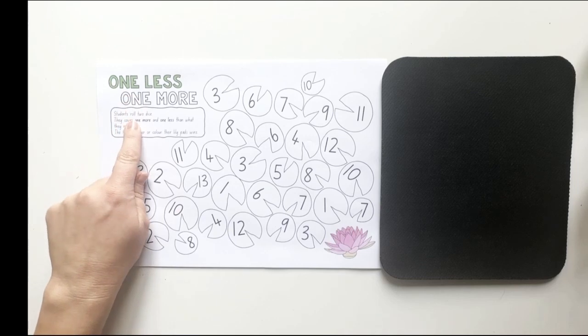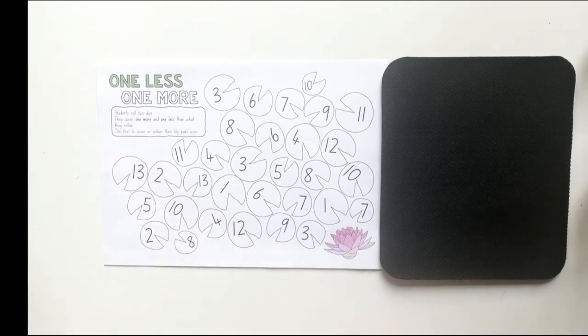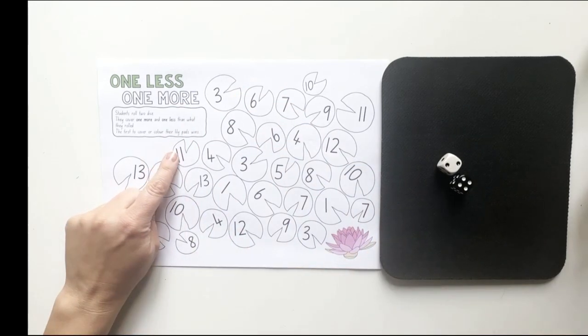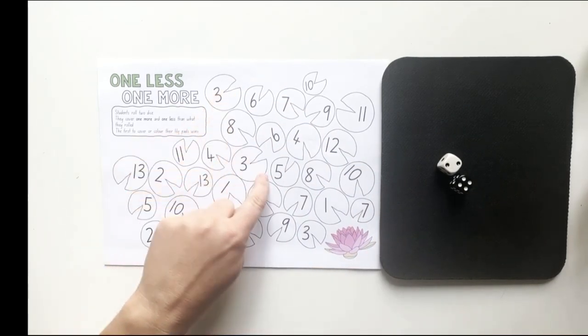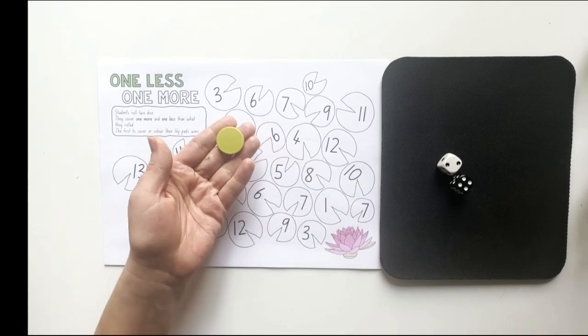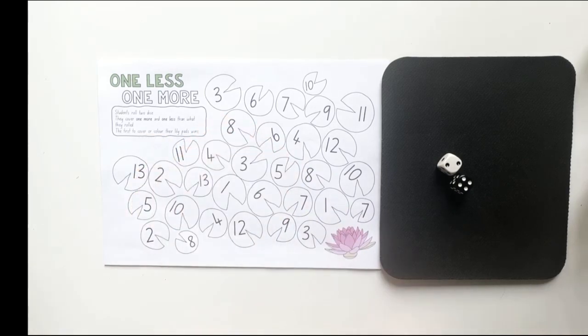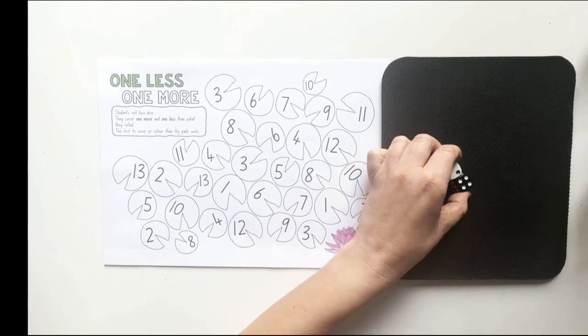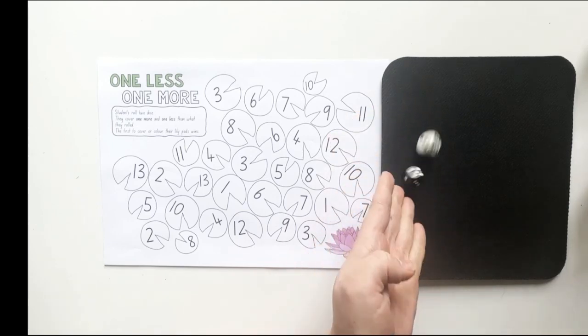For this version of the game, I need two dice. So I have my two dice here, and I need to cover up these lily pads as I work through the game. So I'm using counters that look like this. Today, you're going to roll two dice and find out what that total is. Let's take a look.